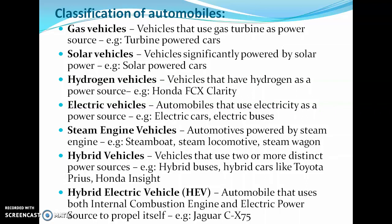Hydrogen Vehicles use hydrogen as a power source — an example is the Honda FCX Clarity. Electric Vehicles are automobiles that use electricity as a power source; nowadays we are seeing electric cars and electric buses. Then Steam Engine Vehicles are automotive powered by steam engines, such as steam boats, steam locomotives, and steam wagons.